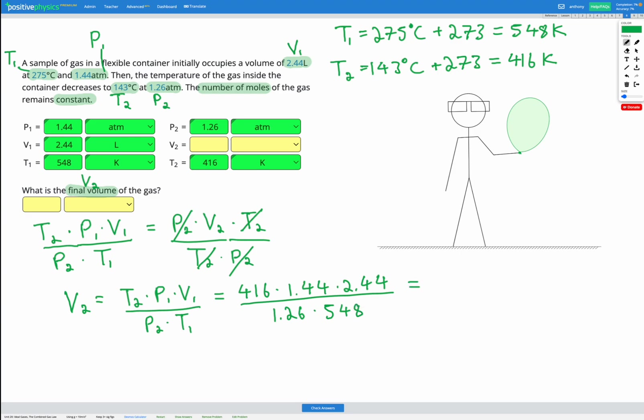If we put all that into our calculator, we're going to come out with a volume of 2.12 liters. So let's check that here. 2.12 liters.